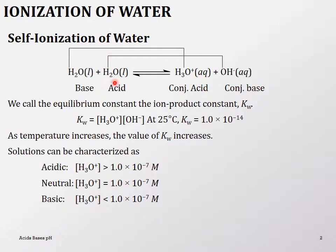Acid gives conjugate bases; bases become conjugate acids. So when a water molecule reacts with another water molecule, you end up getting hydronium ion and hydroxide ion as products.